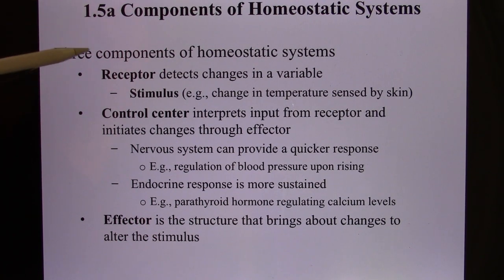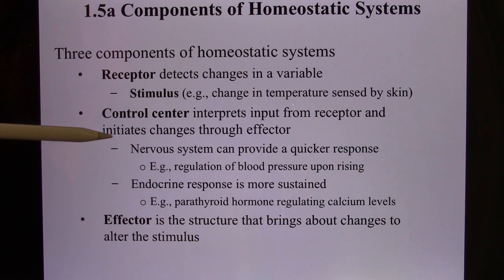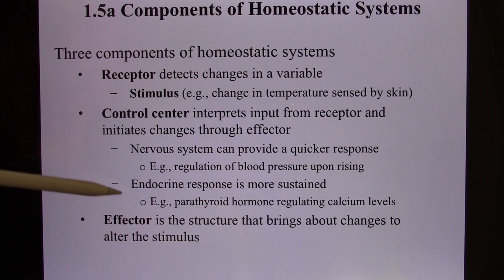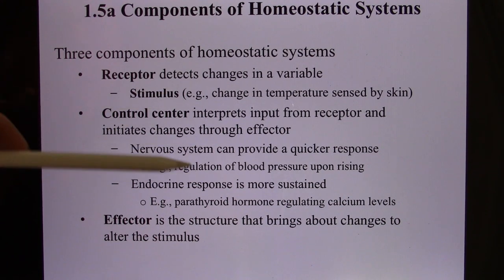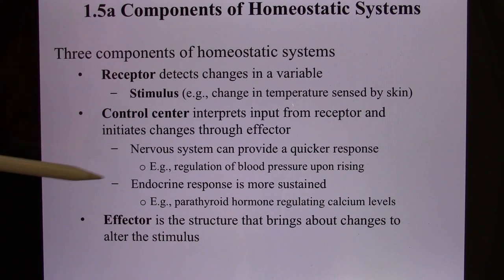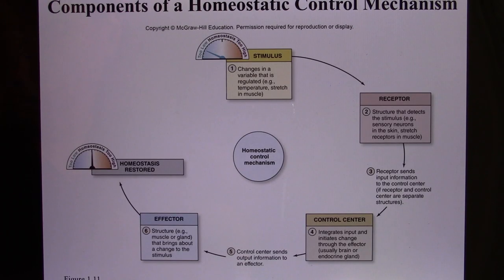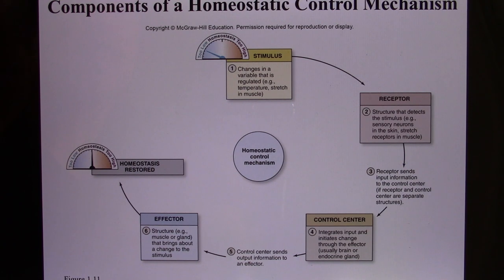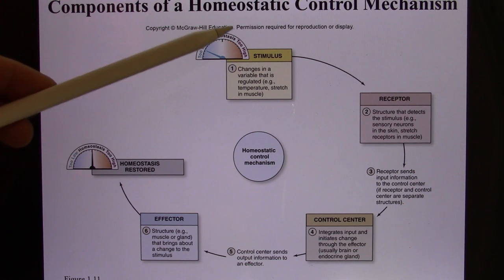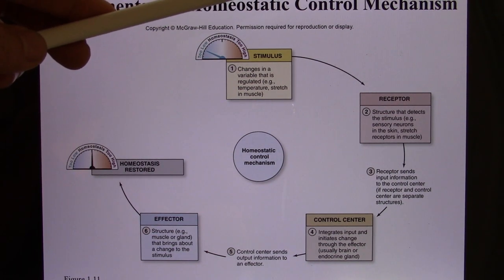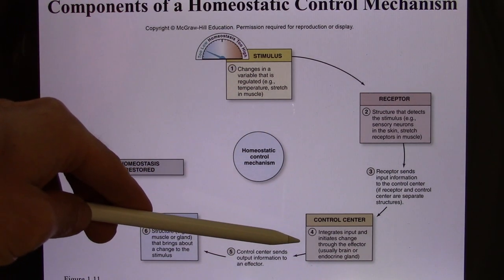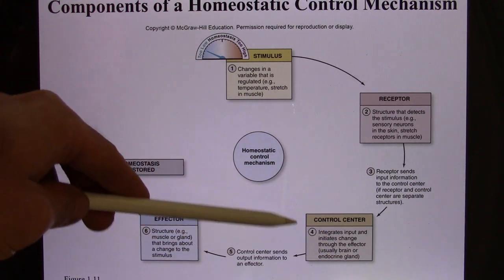So you're going to have a receptor that picks up the stimulus. You're going to have a control center, and your two long-distance communication systems — the nervous system and the endocrine system — can do the function. Eventually you have an effector that does the job. The example we use is body temperature. Say your body temperature increases — you need a receptor to pick up the body temperature, and it's sent to the control center, which is your brain, specifically a brain area called the hypothalamus.